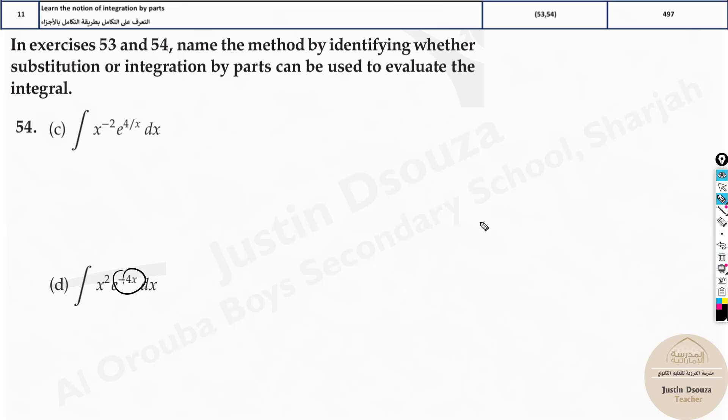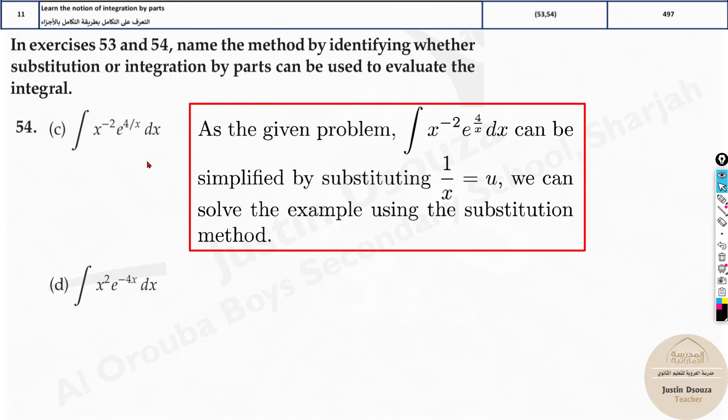Whereas over here, look at this. Minus 4x, the derivative will be minus 4. There is no way you can get this variable. It's not possible at all. So if you can substitute this u and get this similar thing, it cancels off. You can do u substitution over here.